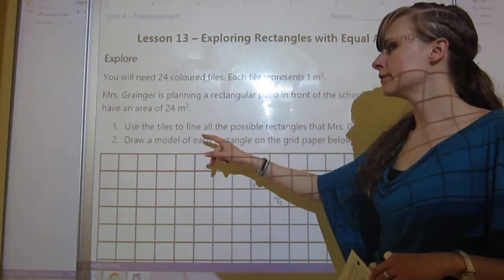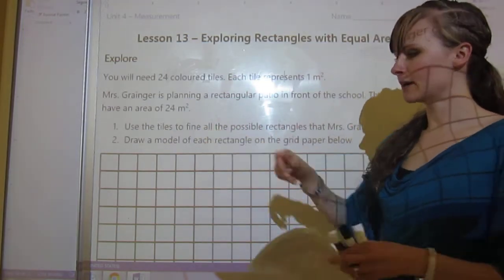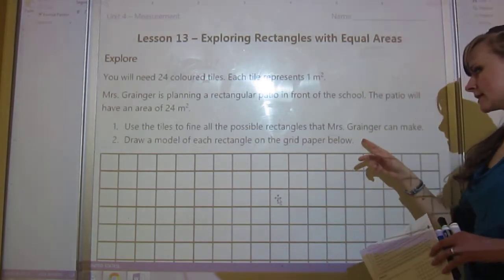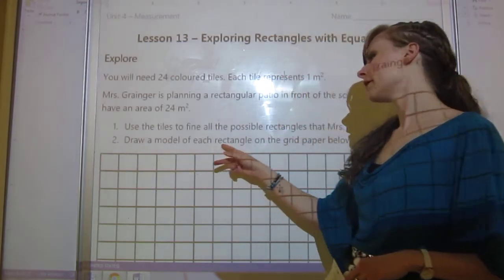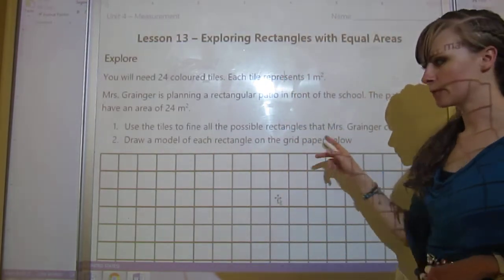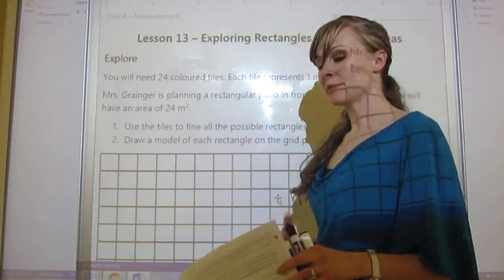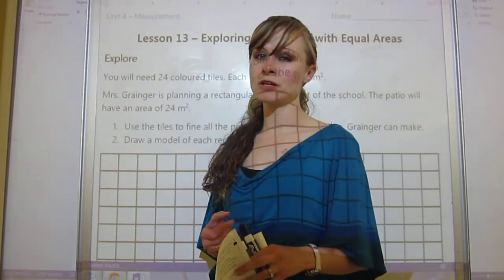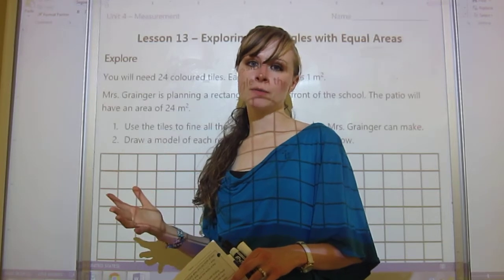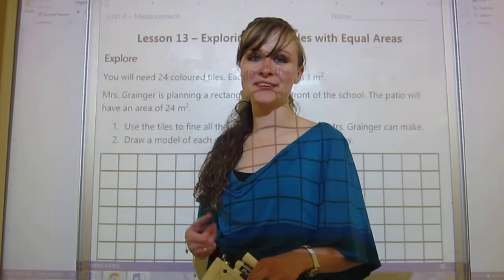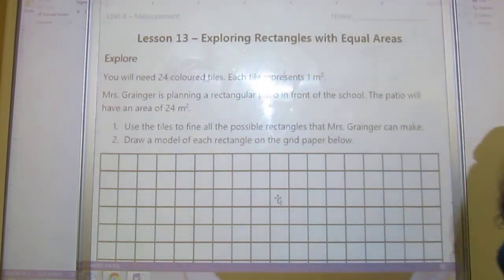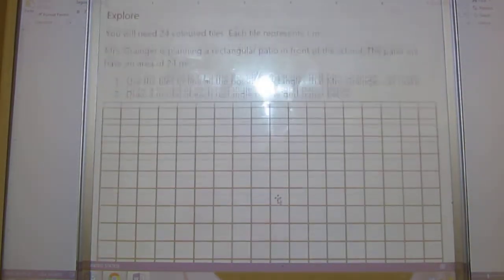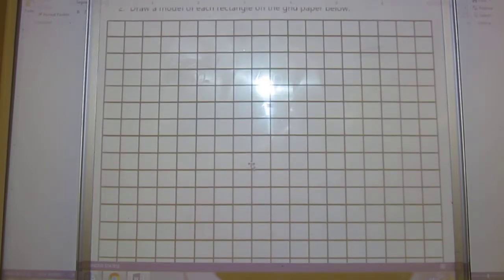Number one: use the tiles to find all the possible rectangles that Mrs. Granger can make. Then number two: draw a model of each rectangle on the grid paper below. I'm going to get you to do this by yourself and see how many you can find, and then I'll show you all the possible rectangles. So pause the video right now.